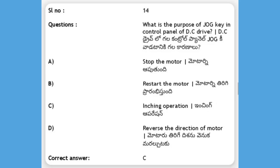What is the purpose of the jog key in the control panel of a DC drive? Options: stop the motor, restart the motor, inching operation, reverse the direction of motor. The answer is C, inching operation.